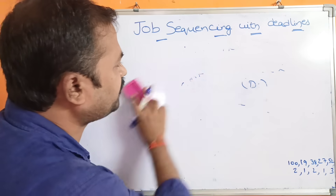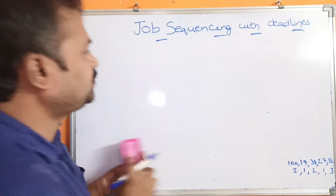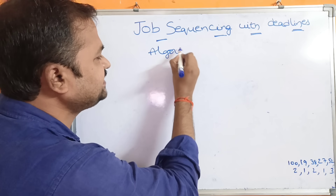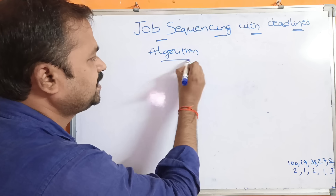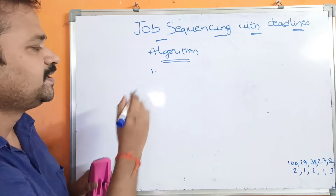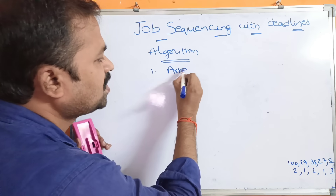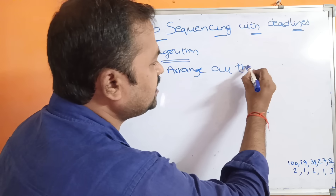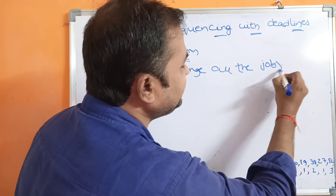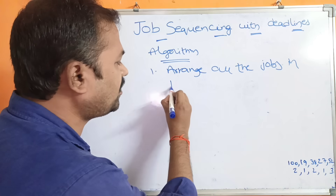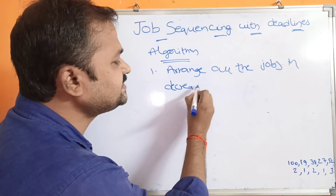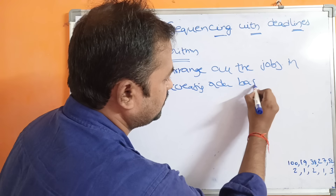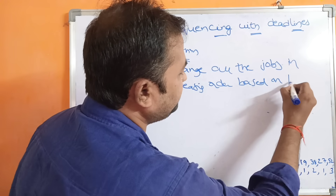Let us see the algorithm to implement this approach — job sequencing with deadlines. The first step is to arrange all the jobs in descending order based on their profit values.